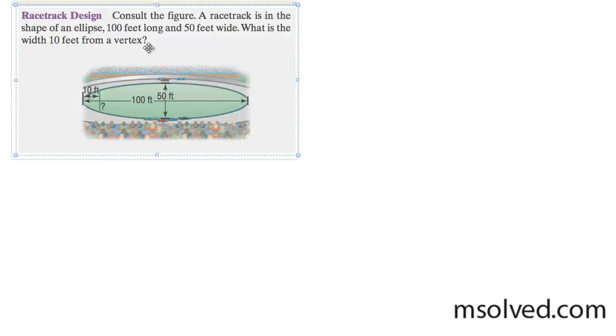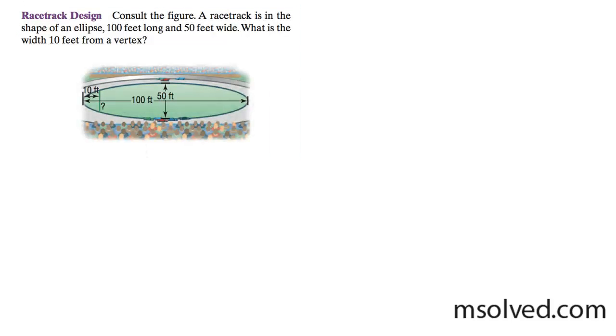We have a racetrack here, and we are given all the values for the components of the vertices, the width and the height of it. What we want to find out is what is the width of the track 10 feet from the vertex, so this point here we want to know exactly how long this is.